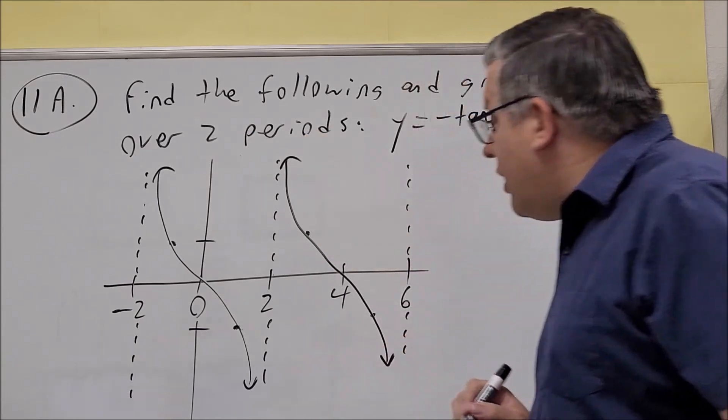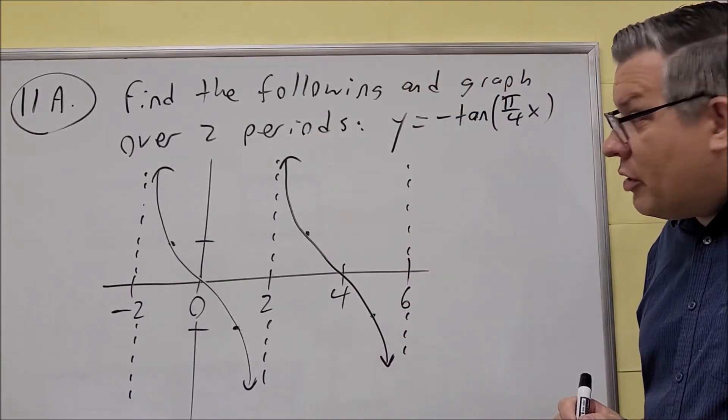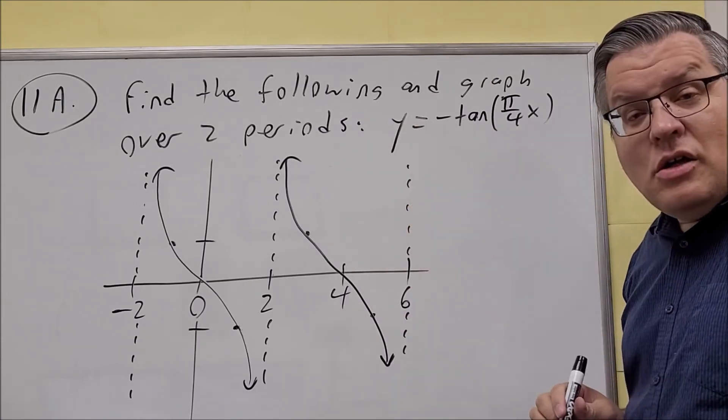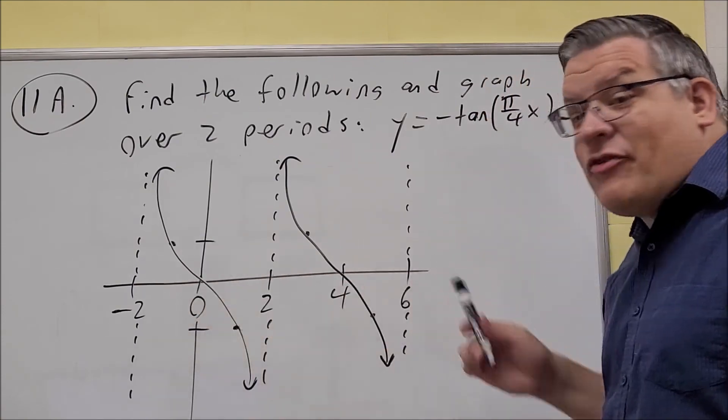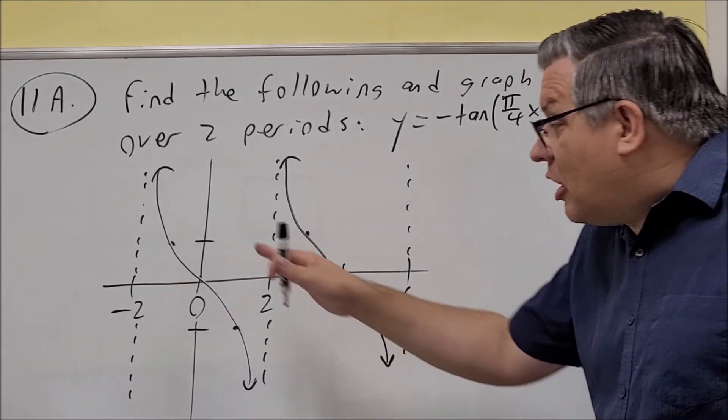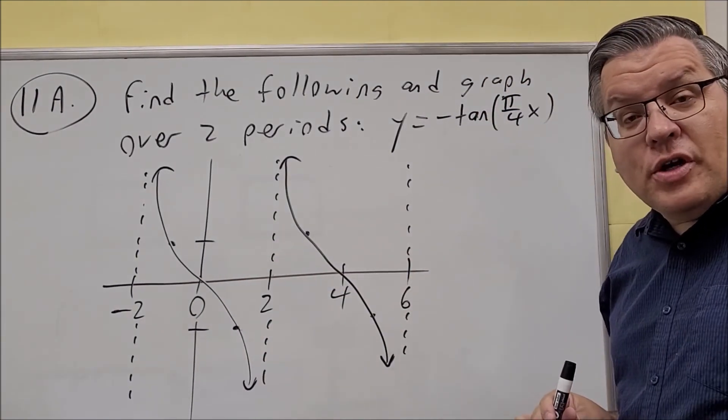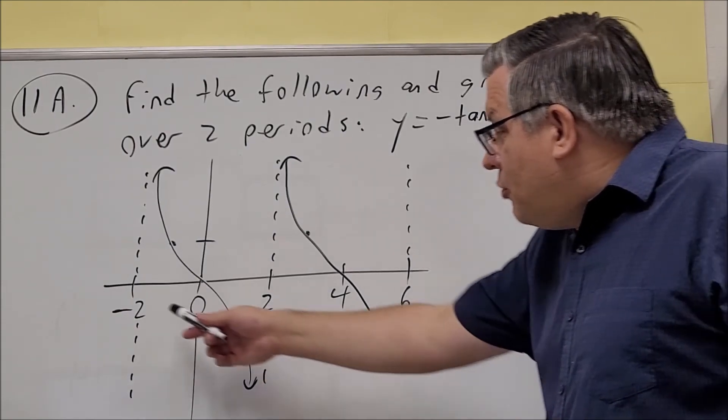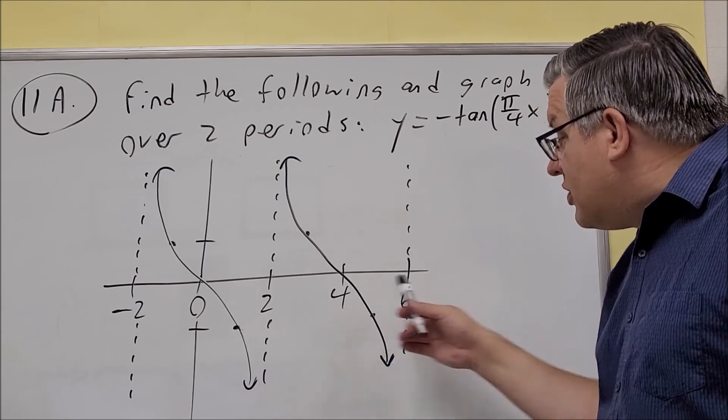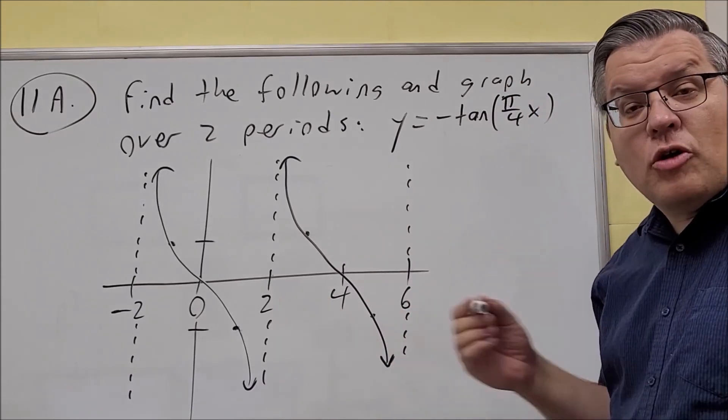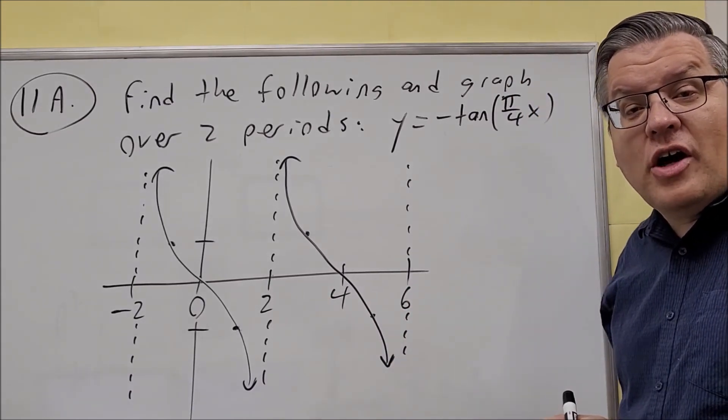Okay, so that's your completed graph. It says to graph it over 2 periods. This is why you want to find 5 key points total, because that automatically gives you the 2 periods you need. Between negative 2 and 2 is a distance of 4. Between 2 and 6 is also 4, confirming our period is 4.